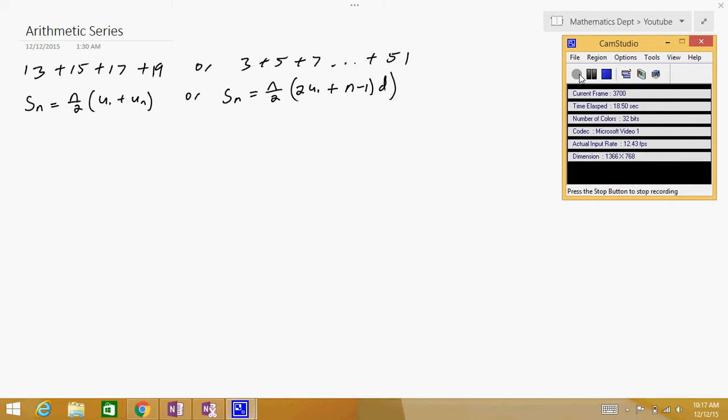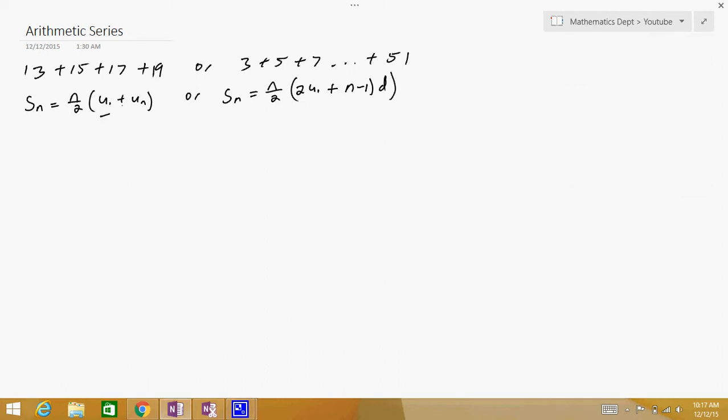We have two formulas to solve an arithmetic series. Sn equals n divided by two times the quantity u1 plus un, where u1 is the first term, and un is the last term in your series, and Sn is the sum of all the terms added together.